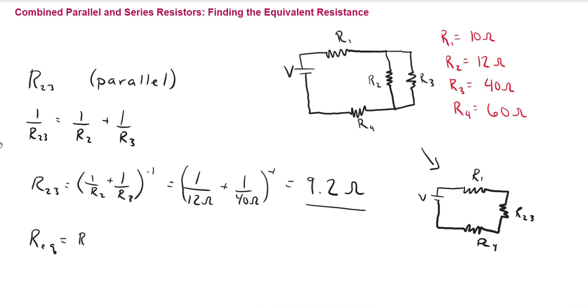Now what we can do to get the equivalent resistance of this whole circuit is just add these together. So the equivalent resistance for the circuit is R1 plus R23 plus R4. That is going to be 10 ohms plus 9.2 ohms plus 60 ohms. That gives us a total resistance of 79.2 ohms.